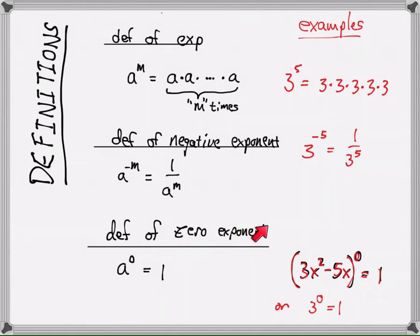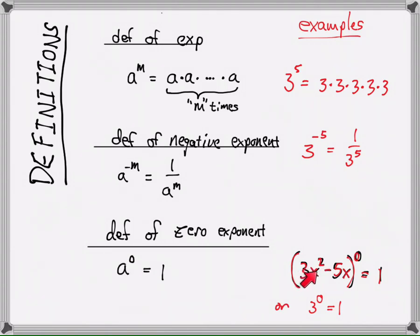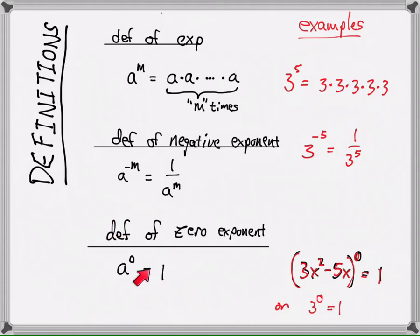Definition of zero exponent: if I have A to the zero power, I get 1. A is any number — any number you can think of, take it to the zero power, it equals 1. Here's an algebraic expression: 3x squared minus 5x, raised to the zero power — that's 1. And 3 to the zero is also 1. By definition, the zero exponent is defined to make the result 1 for any base.